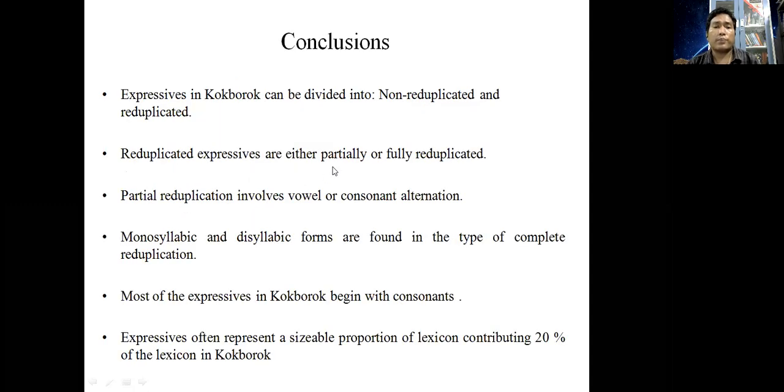Conclusions. Expressives in Kokhbarok can be divided into non-reduplicated and reduplicated. Reduplicated expressives are either partially or fully reduplicated. Partial reduplication involves vowel or consonant alternation. Monosyllabic and disyllabic forms are found in the type of complete reduplication. Most of the expressives in Kokhbarok begin with consonants. Expressives often represent a sizable proportion of lexicon, contributing 20 percent of the lexicon in Kokhbarok.